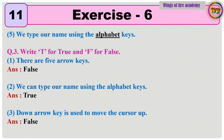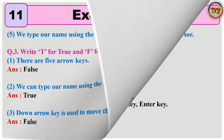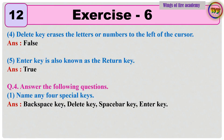Question 3: Write T for true and F for false. 1. There are 5 arrow keys. Answer: False. 2. We can type our name using the alphabet keys. Answer: True. 3. Down arrow key is used to move the cursor up. Answer: False. 4. Delete key erases the letters or numbers to the left of the cursor. Answer: False. 5. Enter key is also known as the return key. Answer: True.